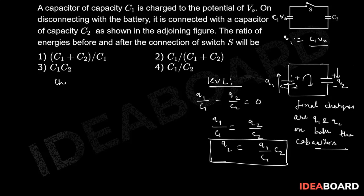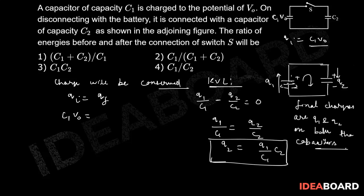Since charge is a conserved fundamental quantity, Q_initial equals Q_final. So C1·V0 = Q1 + Q2. This is equation number one. Substituting the value of Q2 into equation one allows us to find Q1.